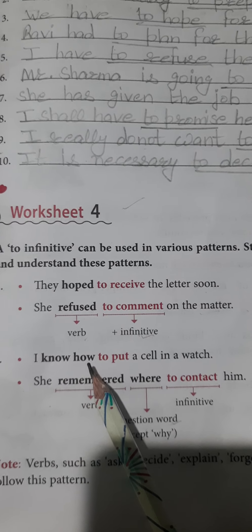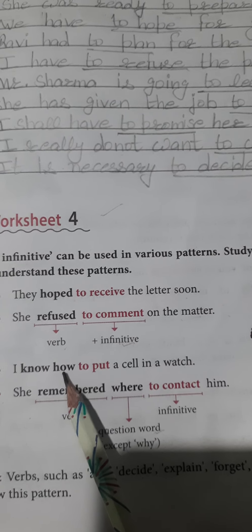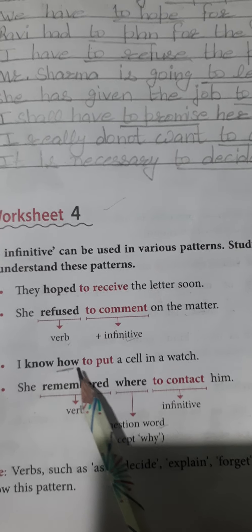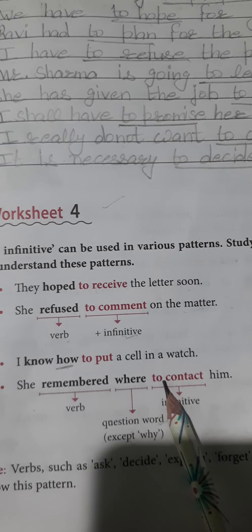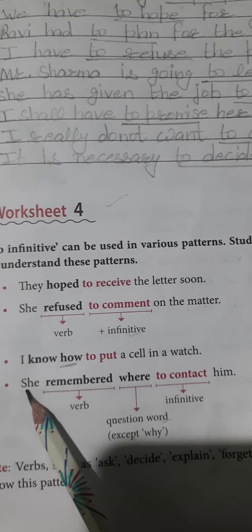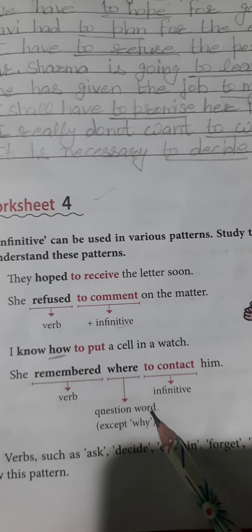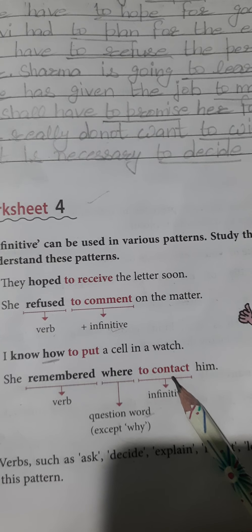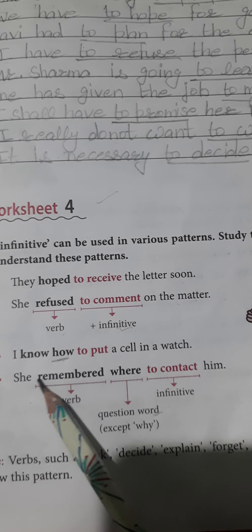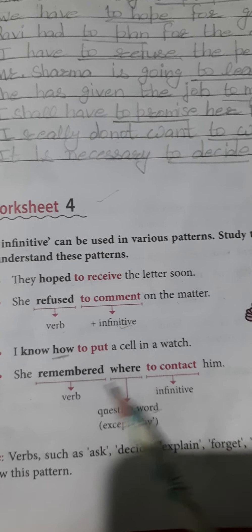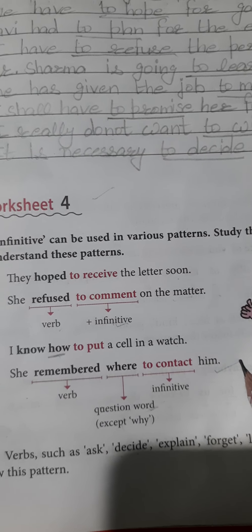'I know how to put a cell in a watch.' Here we are applying 'how,' which is a question word. 'She remembered where to contact him.' In this sentence, 'she' is the subject, 'remembered' is the verb, 'where' is the question word, and 'to contact' is the infinitive. We can frame the sentence structure like this: Subject + verb + question word + infinitive + object.